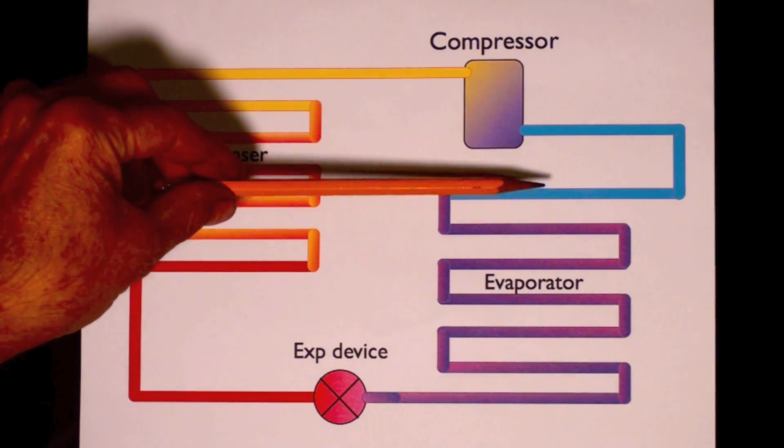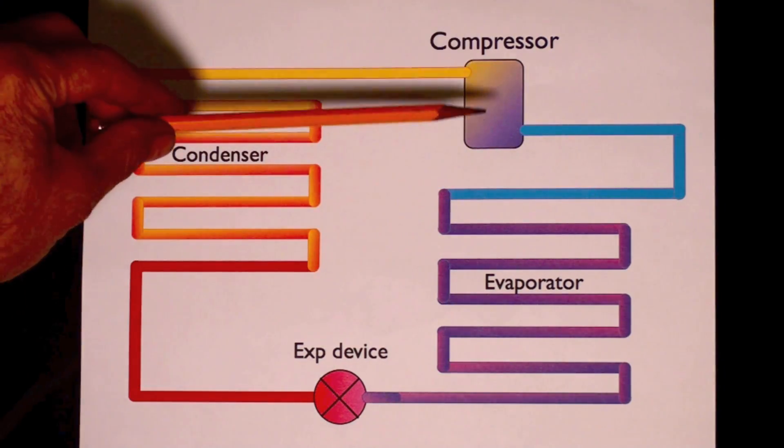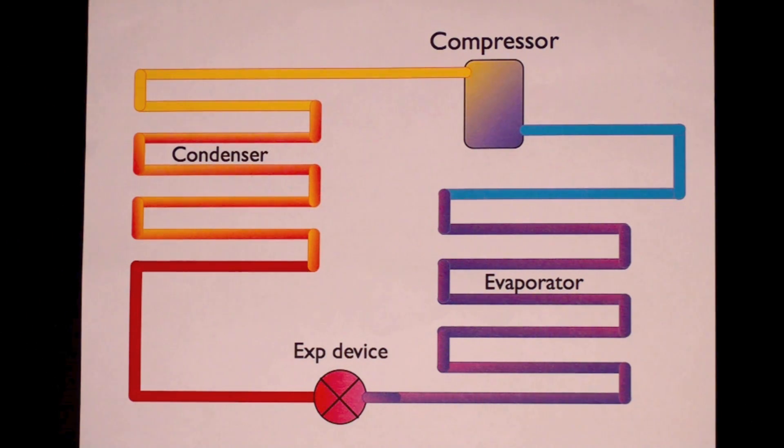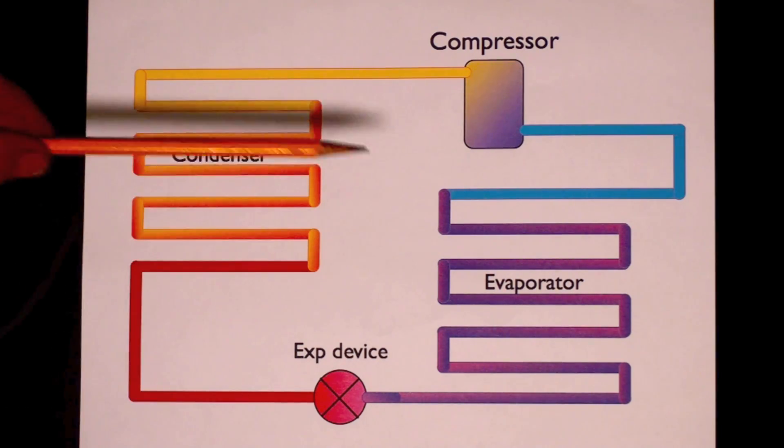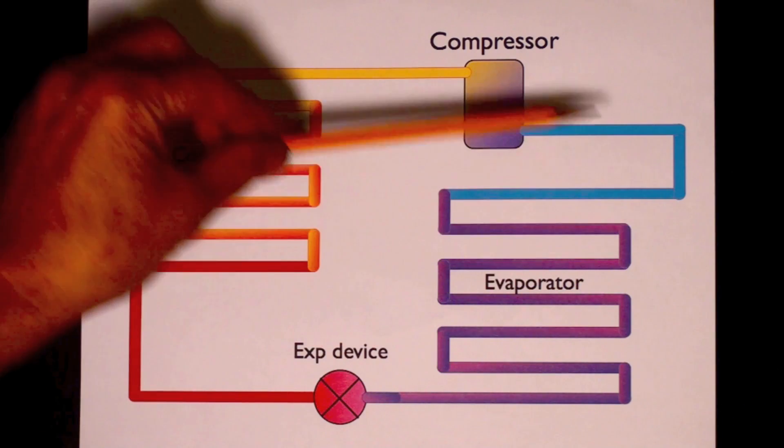This will be, this should be, all gas coming into the compressor, because the compressor is a compressor that compresses gas. It can't compress liquid, so we want a gas in the compressor. And then it just goes through the cycle again.